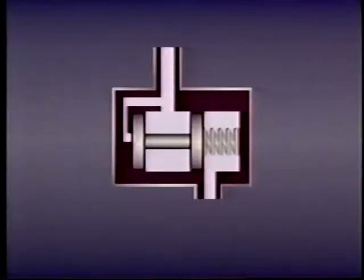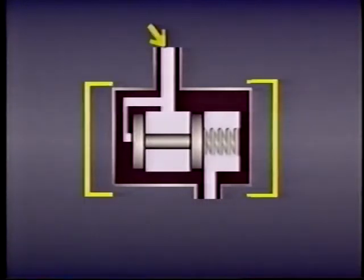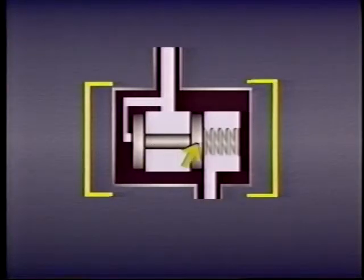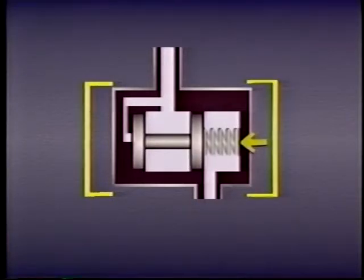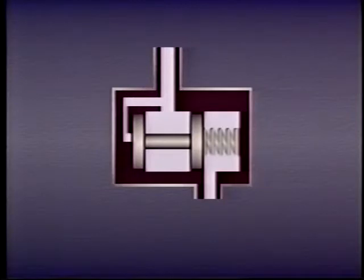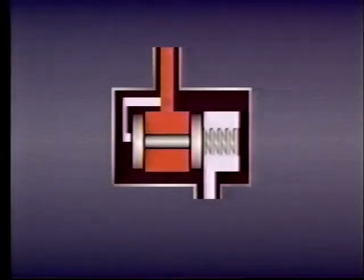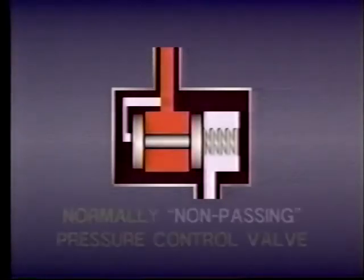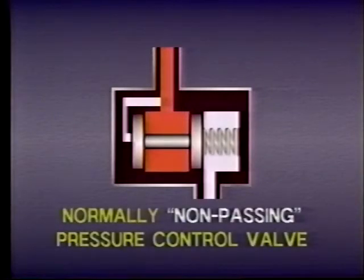Pressure control valves generally consist of a valve body with an inlet port, an outlet port, an internal moving part called the spool, and a spring at one end of the valve which biases the spool — that is, the spring holds the spool in position at one end of the valve body. At the other end, a small internal passageway leads from the inlet port to the end of the spool opposite the spring. If the spool is biased so it blocks the flow of fluid between the two ports, we call it a normally non-passing pressure control valve.